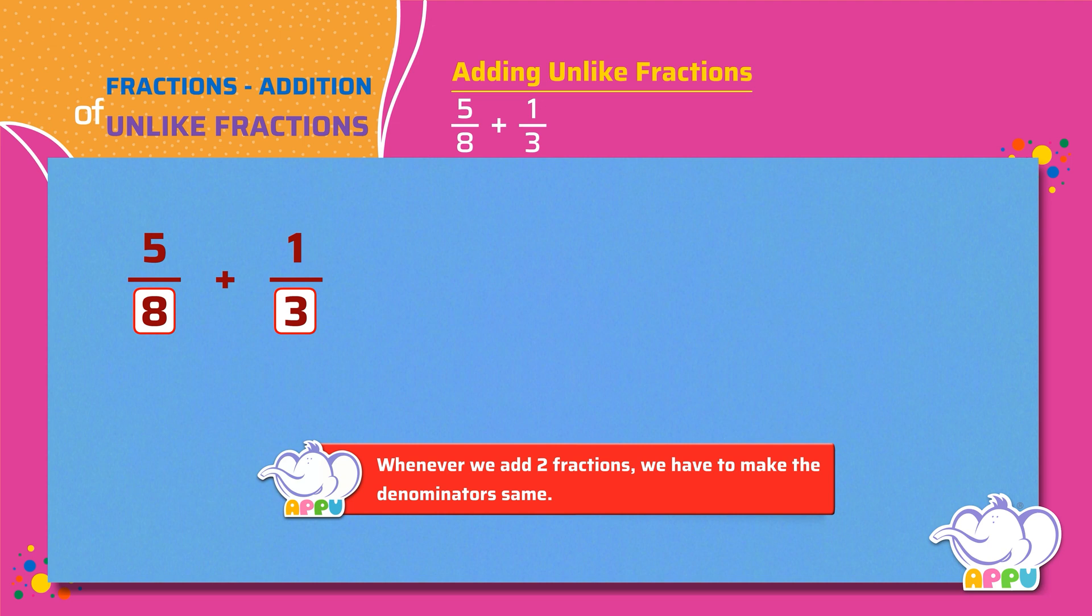We multiply the denominator of the first fraction with the denominator of the second fraction. That is 8 times 3. Next, we multiply the denominator of the second fraction with the denominator of the first fraction. That is 3 times 8.